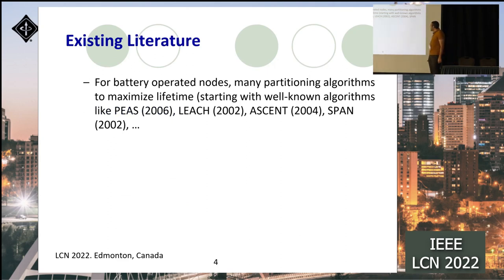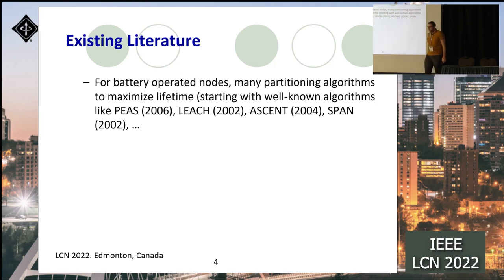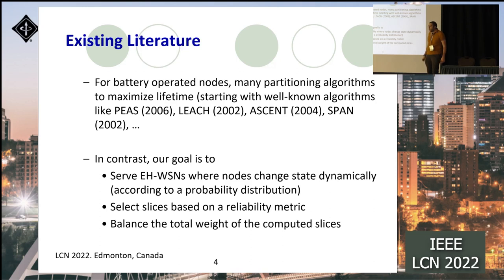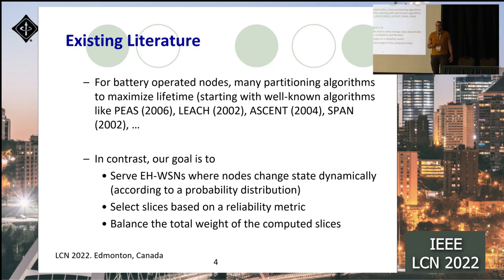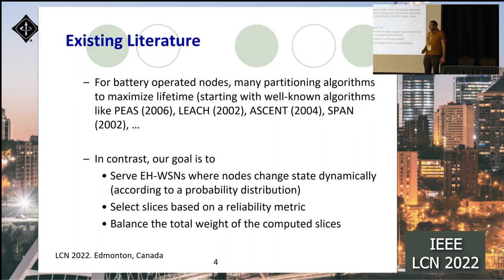Several works in the literature aim to partition networks, including well-known algorithms like BEES, LEACH, ACCENT, and others that aim to maximize network lifetime. In contrast, our work introduces a novel resource sharing problem that serves energy harvesting wireless sensor networks where nodes can change their states dynamically over time according to some probability distribution. Additionally, we take reliability metrics into account while constructing these slices, and we try to balance the total weight of the slices.